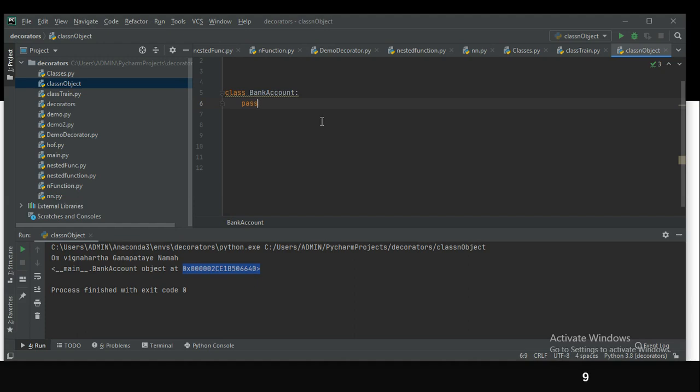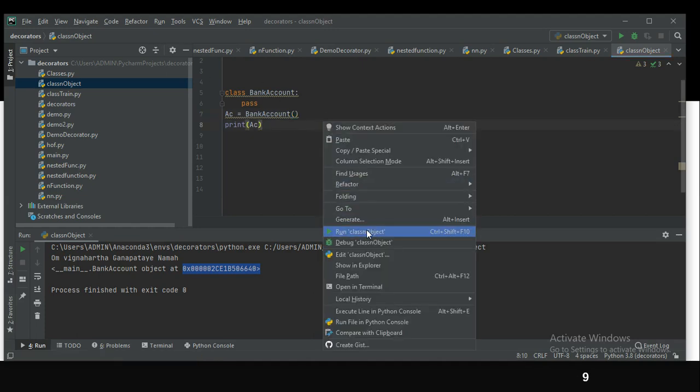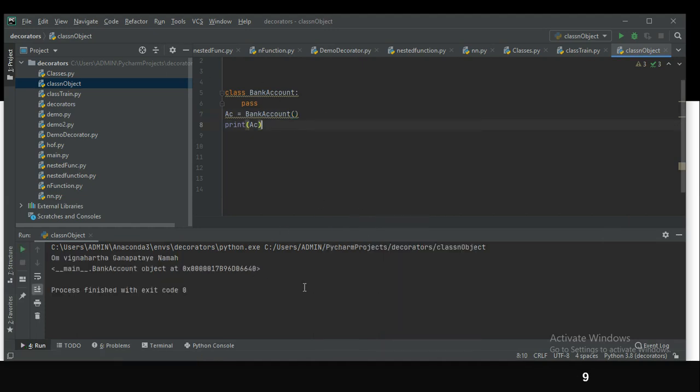Next, in the main function, I will be creating an object. You see, I am going to create an object by the name of ac. To create an object, we need to specify the class name followed by parenthesis. Now I save this and execute it.